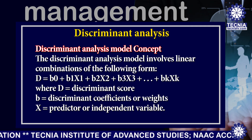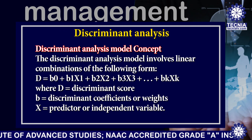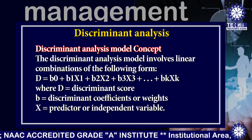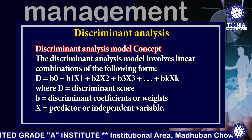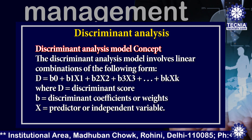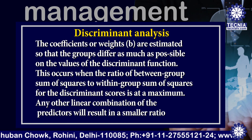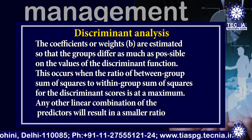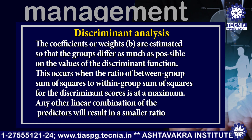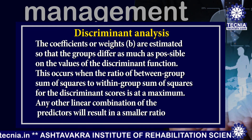Now I am explaining the discriminant analysis model concept. The discriminant analysis model involves linear combinations of the following form: D = B0 + B1X1 + B2X2 + B3X3 + ... + BkXk, where D equals the discriminant score, B equals the discriminant coefficients or weights, and X equals the predictor or independent variable. The coefficients or weights are estimated so that the groups differ as much as possible on the value of the discriminant function. This occurs when the ratio of between-group sum of squares to within-group sum of squares for the discriminant score is at a maximum. Any other linear combination of the predictors will result in a smaller ratio.